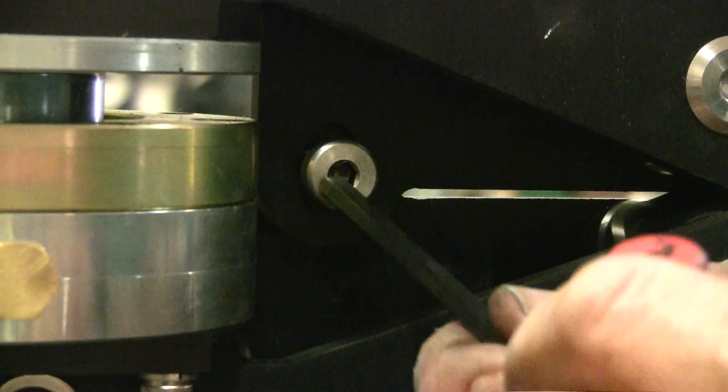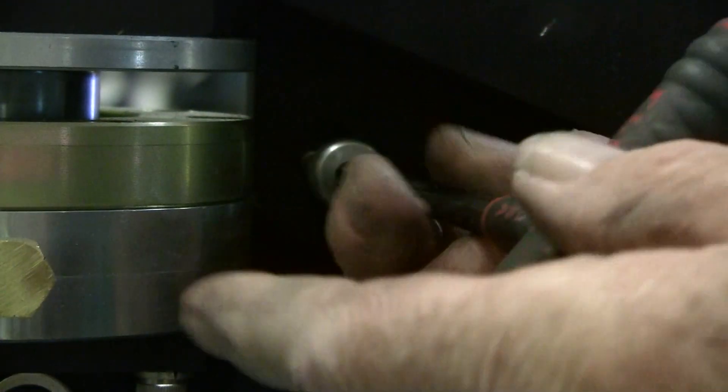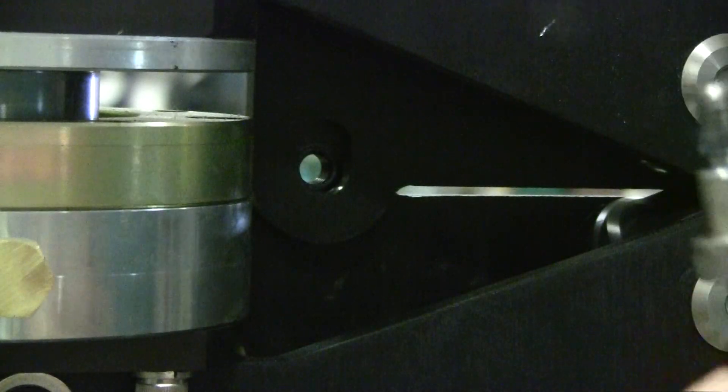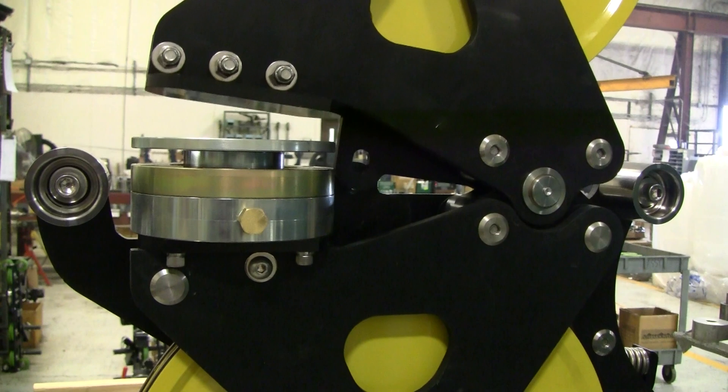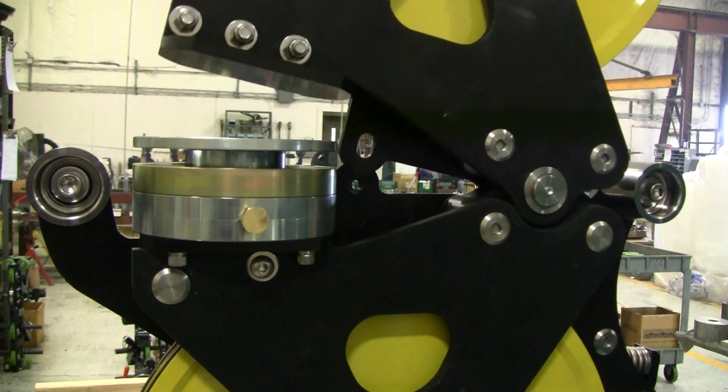Next, remove the shoulder bolt. Note that this fastener holds the bottom part of the measuring head in place. Remember, in this example the measuring head is inverted.